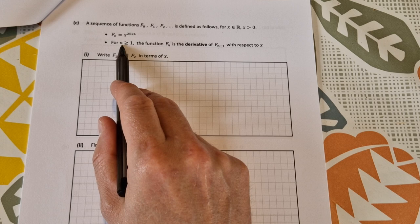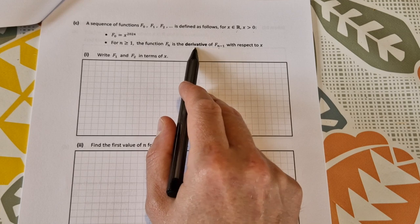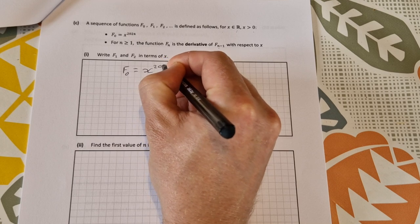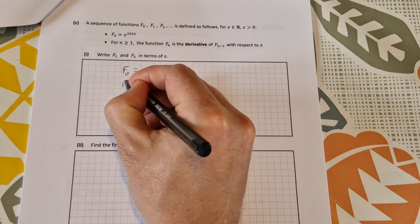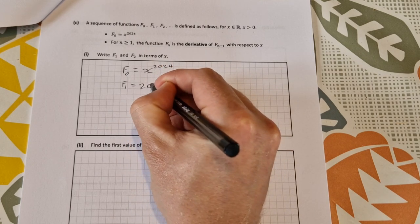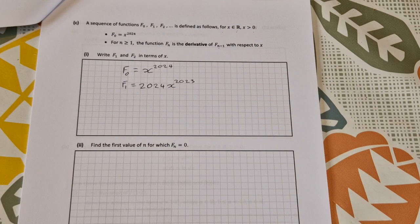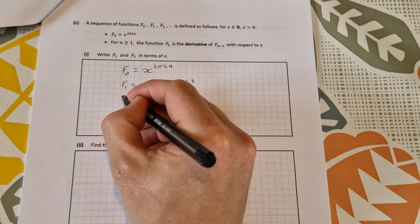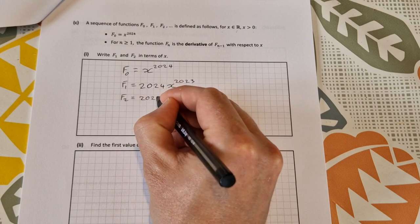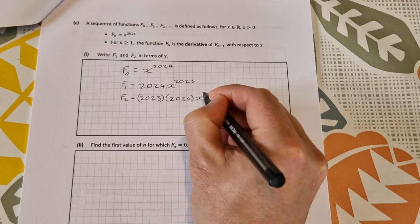It sounds a bit more complicated than it is. What you need to know is as you move up each n as in 0, 1, 2, it's the derivative of the previous one. So f of 0 is equal to x to the power of 2024. If I differentiate that I'll get f1: multiply down by the power, 2024 x to the power of 2023. Then if I want to find f2 you differentiate again, so f2 is equal to 2023 multiplied by 2024 x to the power of 2022.